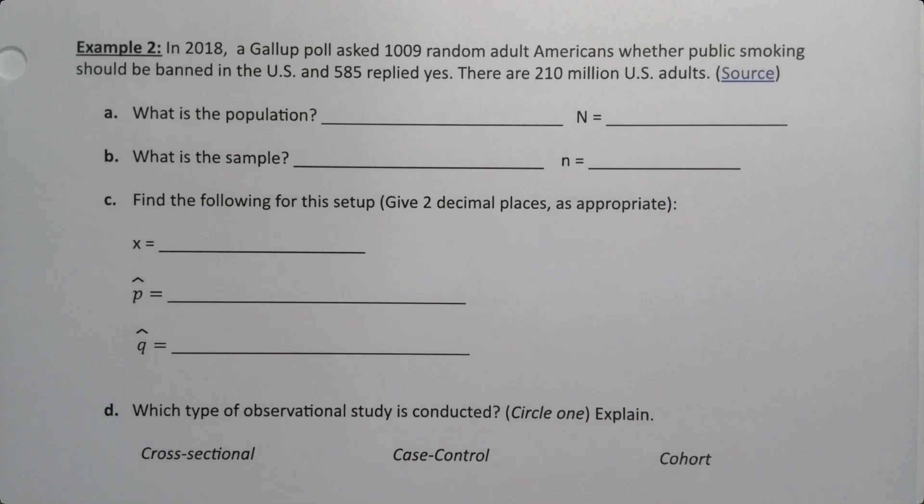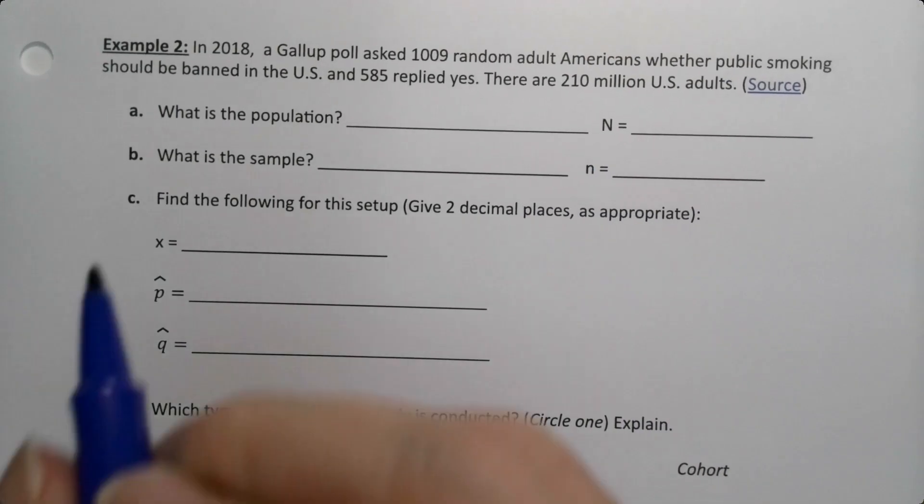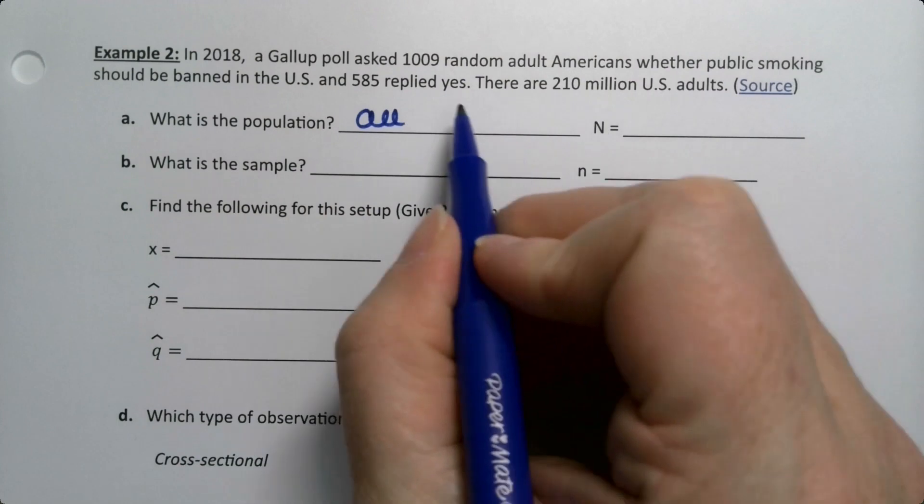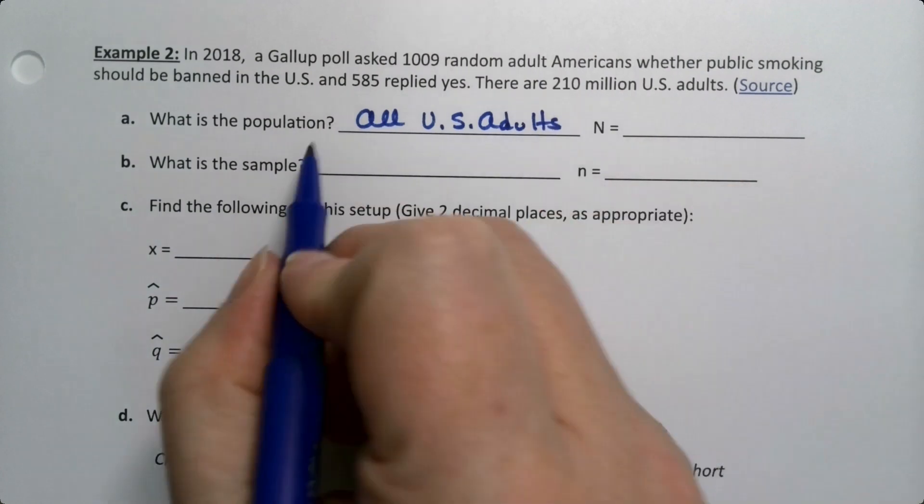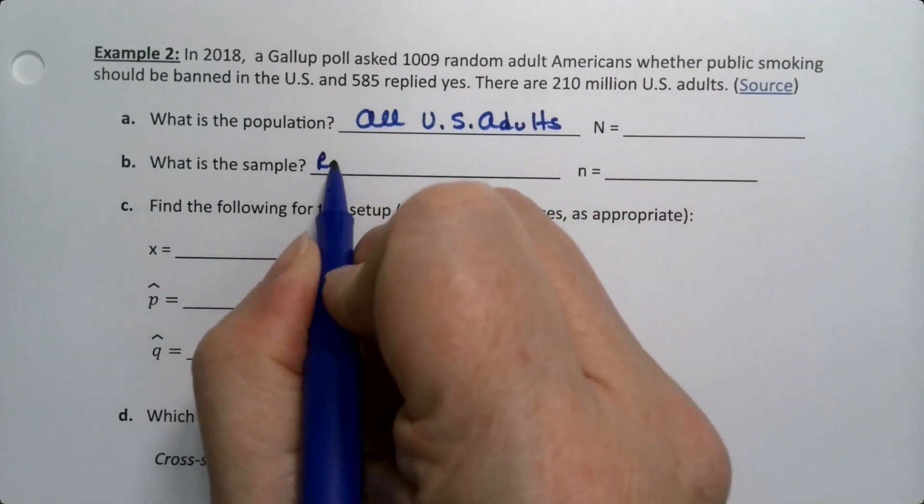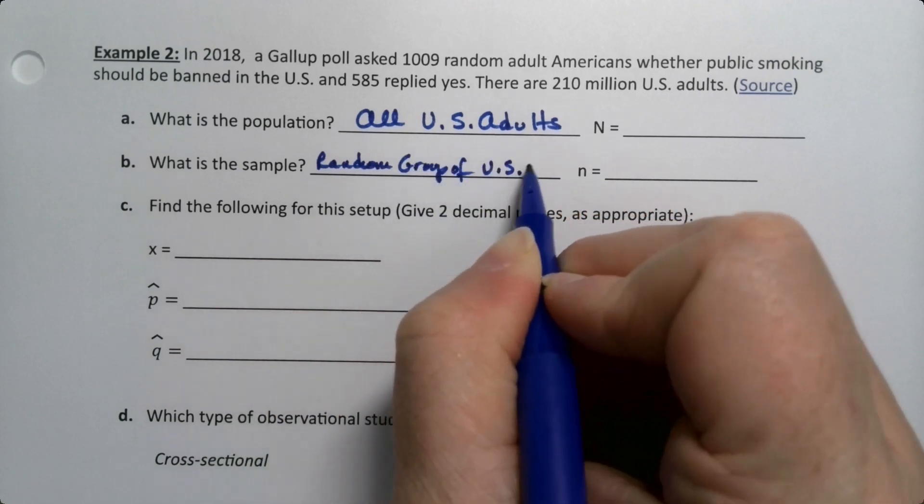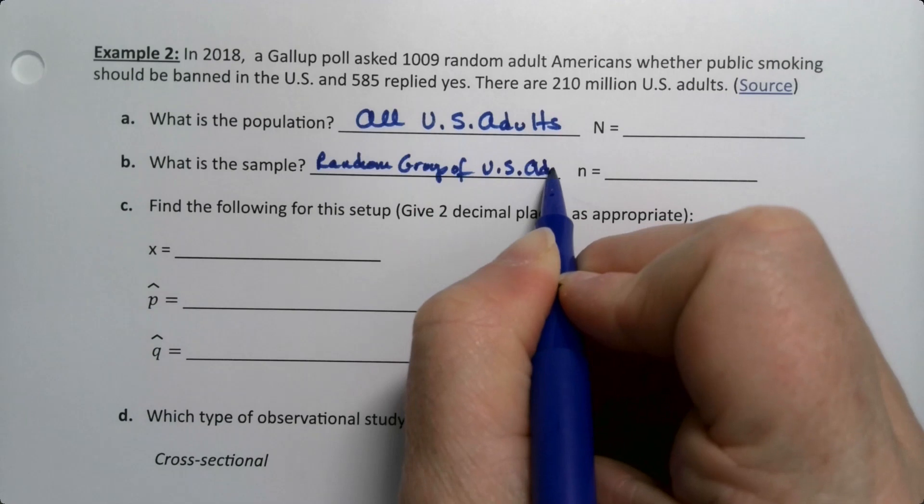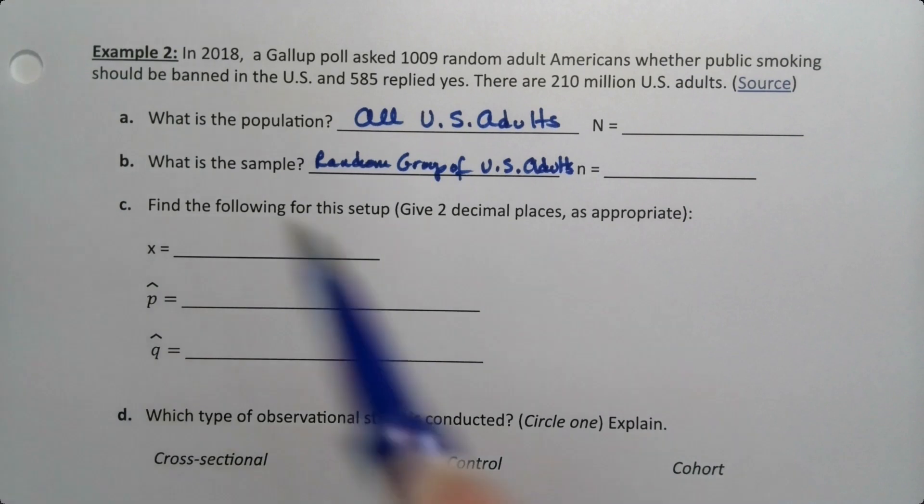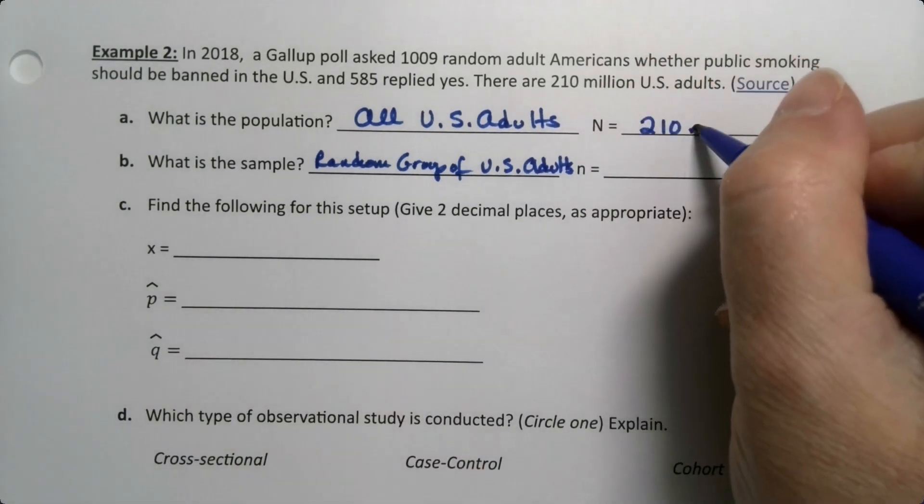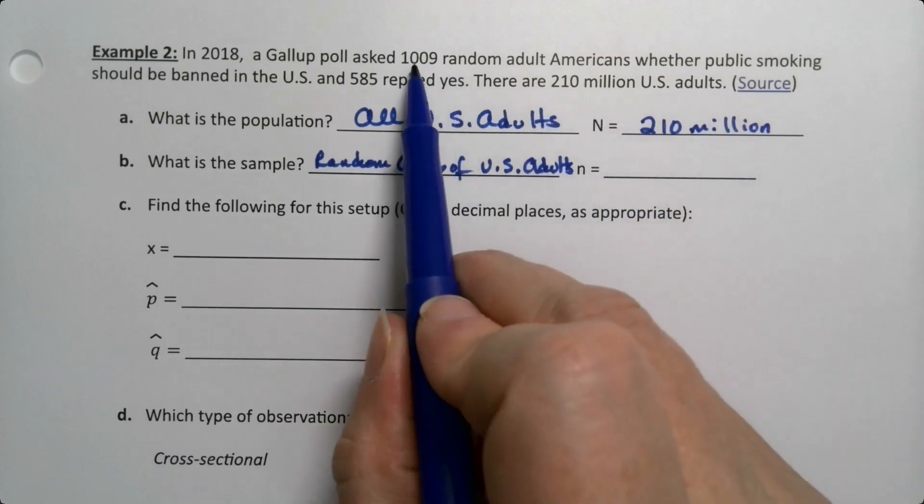All right, what is the population and what is the sample and what are the respective sizes? The population would be all US adults or adult Americans, and the sample was a random group of US adults. This is 210 million because that's the population size, and then the sample size was 1,009.